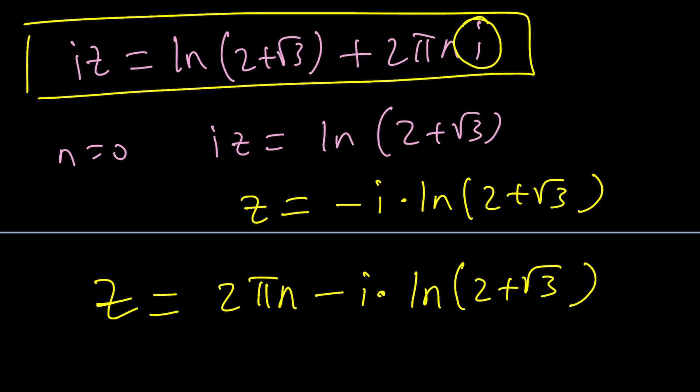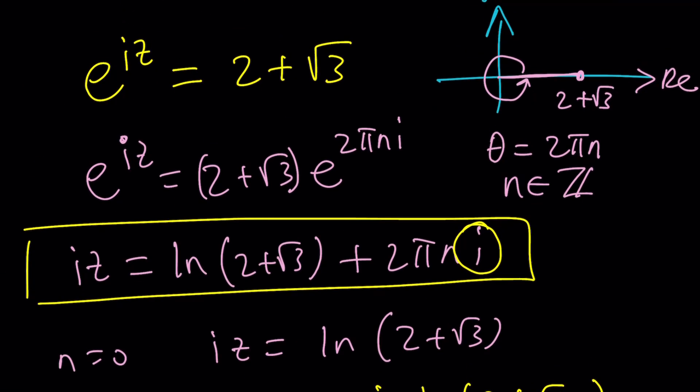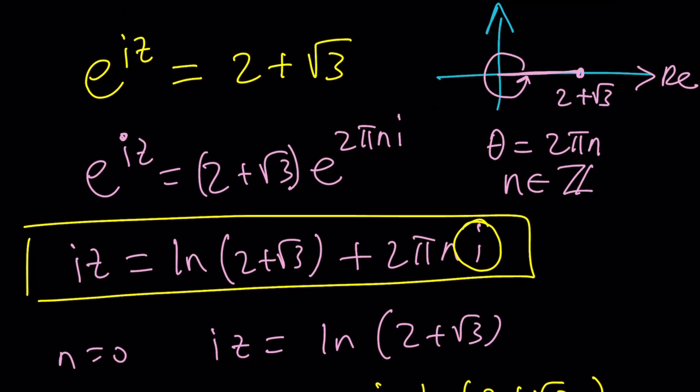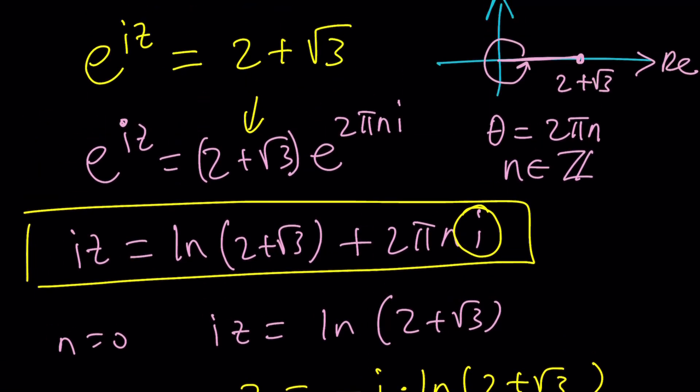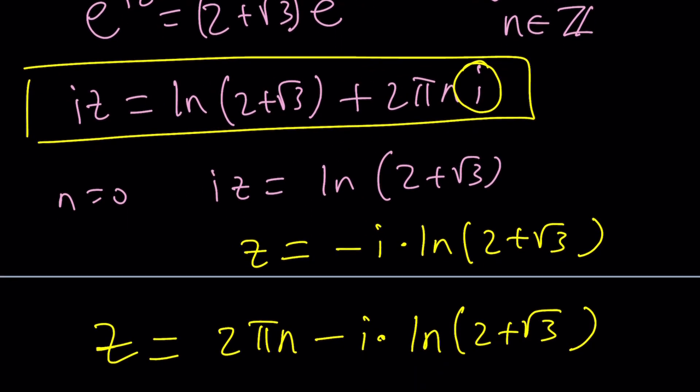Of course, this is for the two plus root three. If you wanted to do the negative one, I mean, it's not negative, I don't know why I keep saying negative. I got stuck on that. But you're just going to replace this number with two minus root three. And it should work exactly the same way.